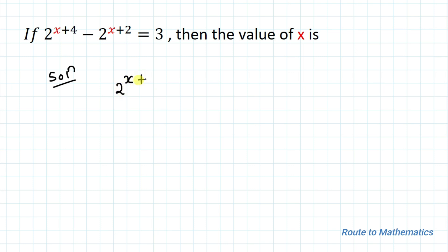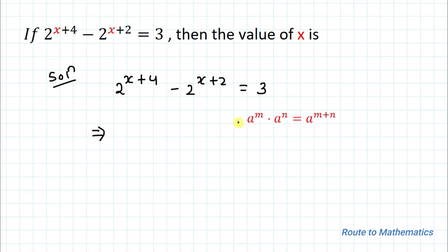The given equation is 2^(x+4) minus 2^(x+2) equals 3. In the next step we are going to apply an exponential law: a^m multiplied with a^n equals a^(m+n). By applying this law we can split 2^(x+4) as 2^x multiplied with 2^4, and similarly 2^(x+2) as 2^x multiplied with 2^2, equals 3.